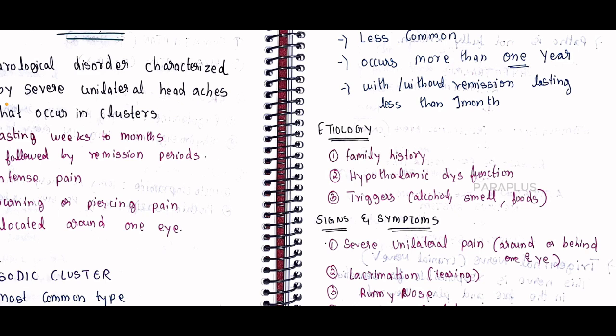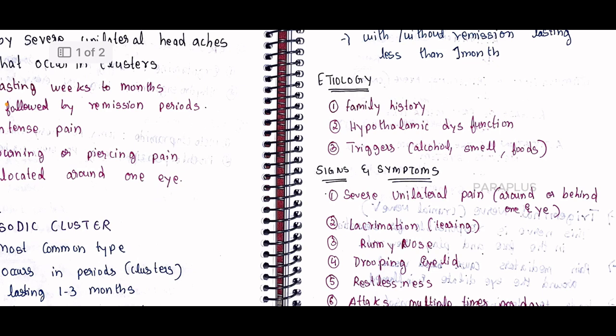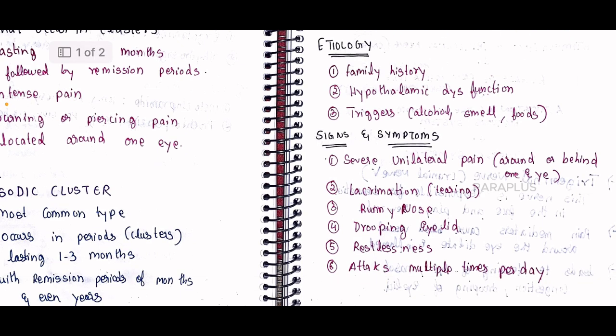Now let's look at the signs and symptoms of cluster type of headache. The main feature is severe unilateral pain around or behind one eye. The pain is severe and strictly one-sided.